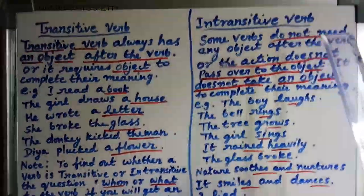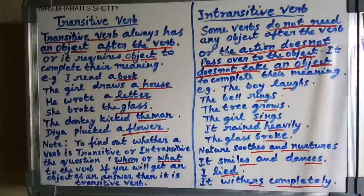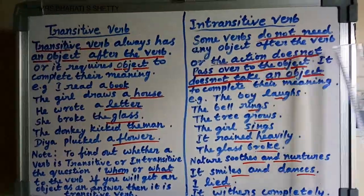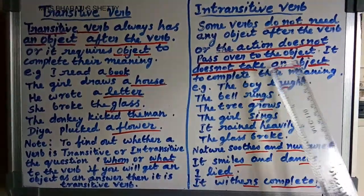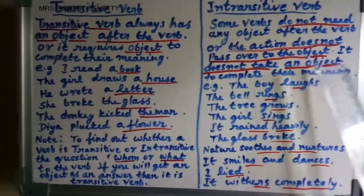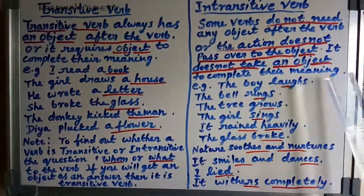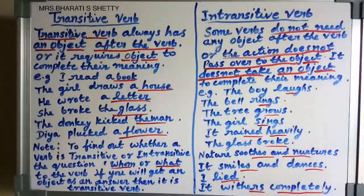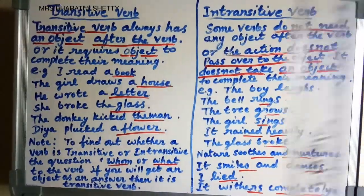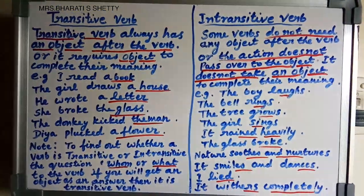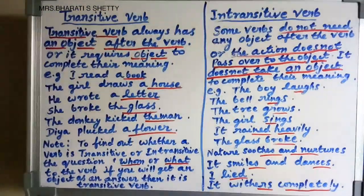Now, intransitive verb. Some verbs do not need any object after the verb, or the action does not pass over to the object — it does not take an object to complete its meaning. That means intransitive verb. So: transitive verb always has an object after the verb; intransitive verb does not need any object after the verb.